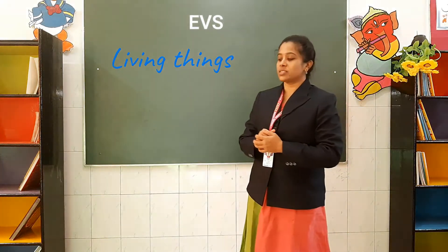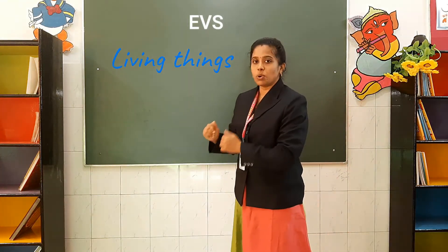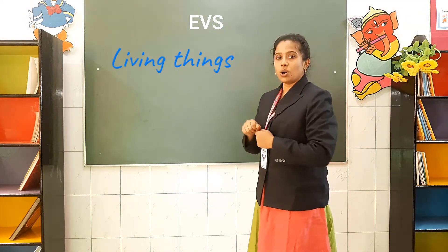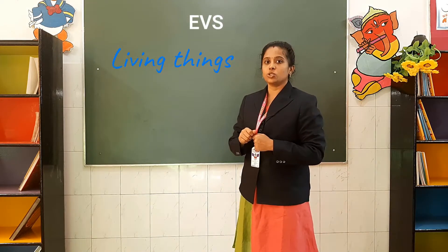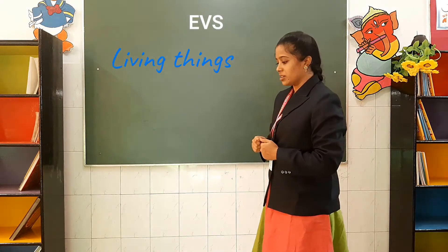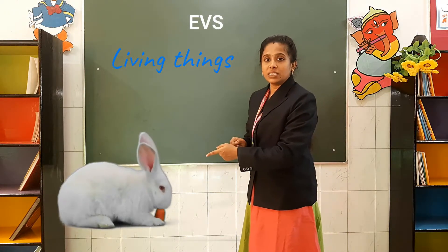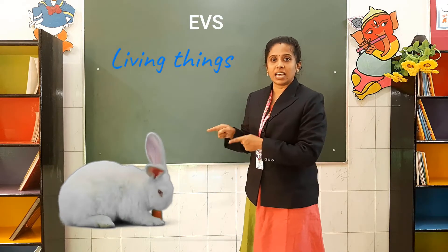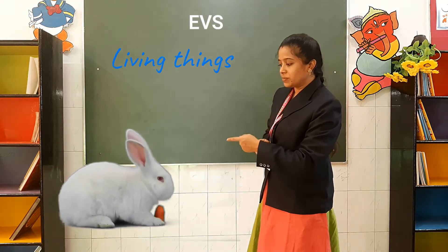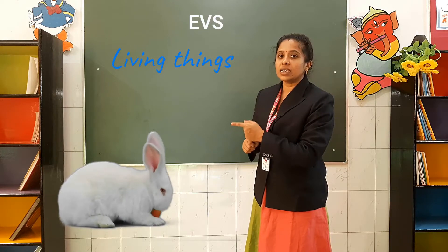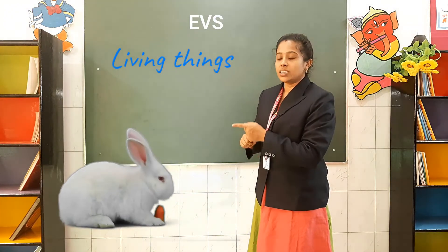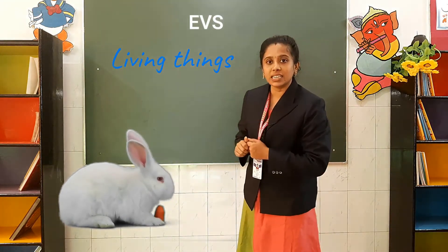Here comes a small rabbit. Let's see what this rabbit is doing. The rabbit is eating. What is it eating? It is eating a carrot. What is this rabbit eating? The rabbit is eating a carrot.